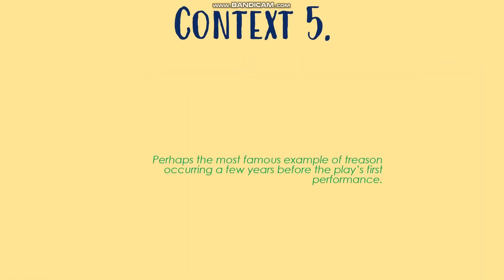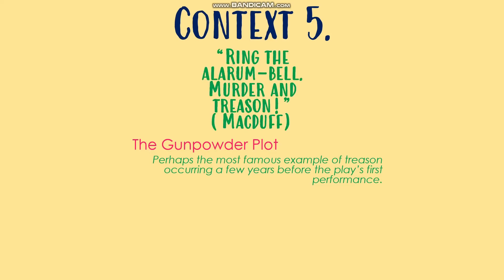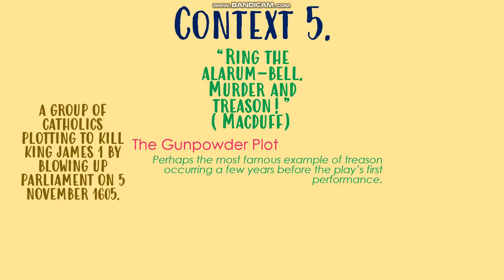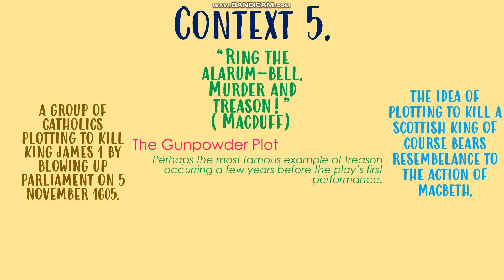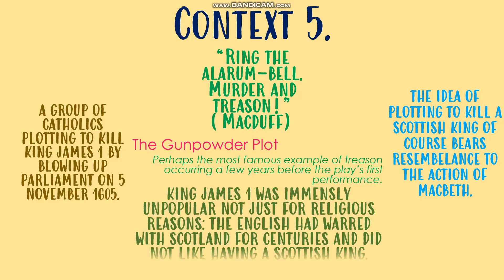Context piece five is linked to the divine right of kings — it's the idea of the Gunpowder Plot, probably the most famous example of treason in English history. The Gunpowder Plot was a group of Catholics who were trying to kill King James I by blowing up Parliament. The idea of plotting to kill a Scottish king therefore bears huge resemblance to the action of Macbeth, and it would be foolish not to talk about this in an examination. Without the Gunpowder Plot, Macbeth's plot would be very, very different — the action of the play would perhaps not have gone this way at all.